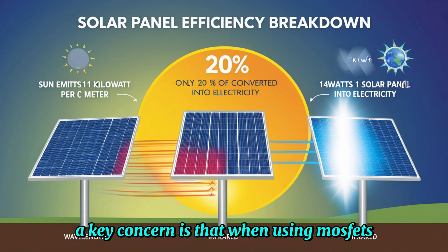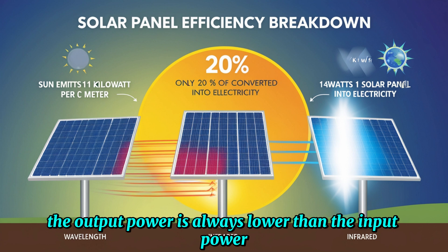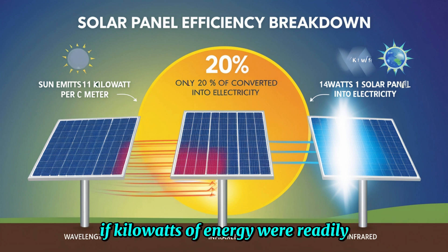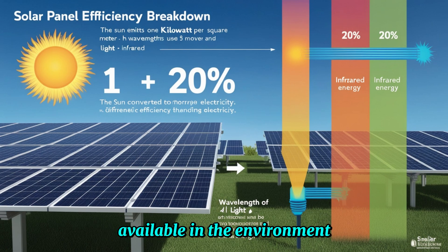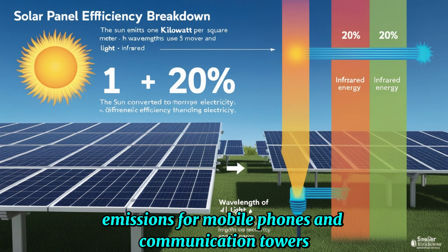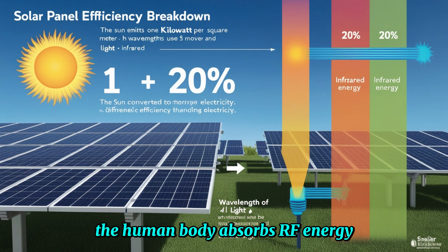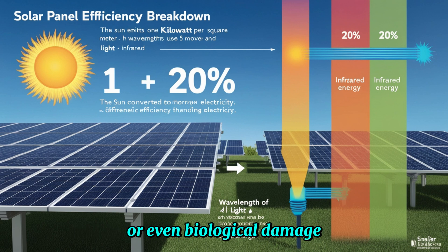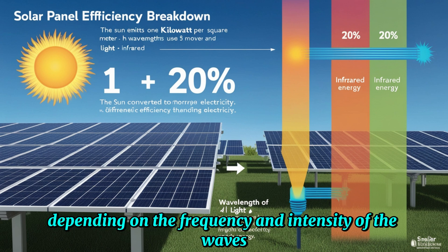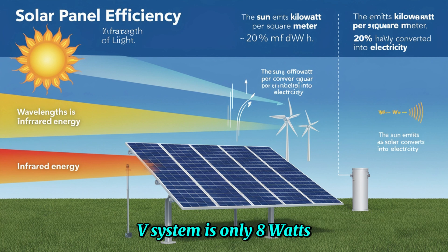A key concern is that when using MOSFETs or similar systems for power conversion, the output power is always lower than the input power. If kilowatts of energy were readily available in the environment and could be captured efficiently, we would expect to see regulatory issues similar to those governing RF emissions from mobile phones and communication towers. The human body absorbs RF energy, and excessive exposure could cause heating or even biological damage, depending on the frequency and intensity of the waves. Another odd detail is that the claimed power output of the Maxwell EV system is only 8 watts, far lower than the kilowatts required for typical electric vehicles.